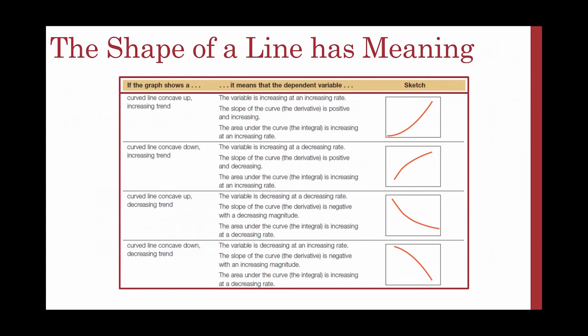A curved line concave up in a decreasing trend means your variable is decreasing at a decreasing rate. The slope is negative and decreasing in magnitude, and the area under the curve is increasing at a decreasing rate. A curved line that is concave down in a decreasing trend means your variable is decreasing at an increasing rate. The slope is negative and increasing in magnitude, and the area is increasing at a decreasing rate.